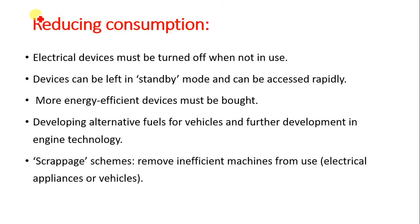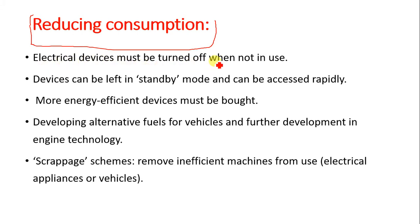The first strategy is reducing consumption. Below are the ways in which we can reduce the consumption of energy. One, we can reduce consumption by turning off electrical devices. Electrical devices must be turned off when not in use. Devices can be left in standby mode and accessed rapidly when needed, so the rate of energy consumption is reduced.